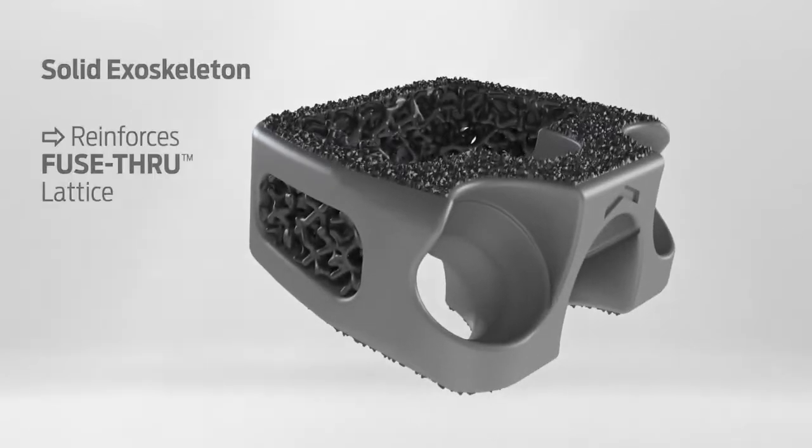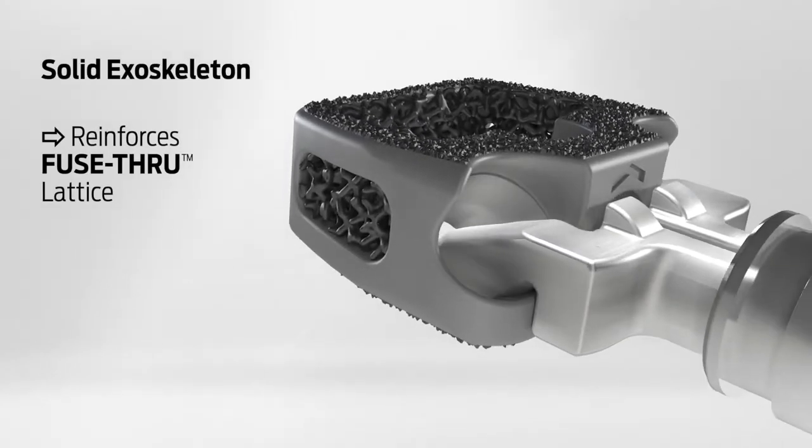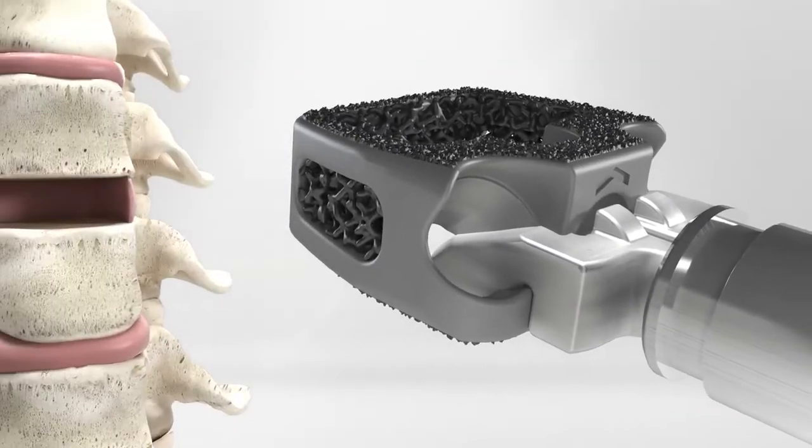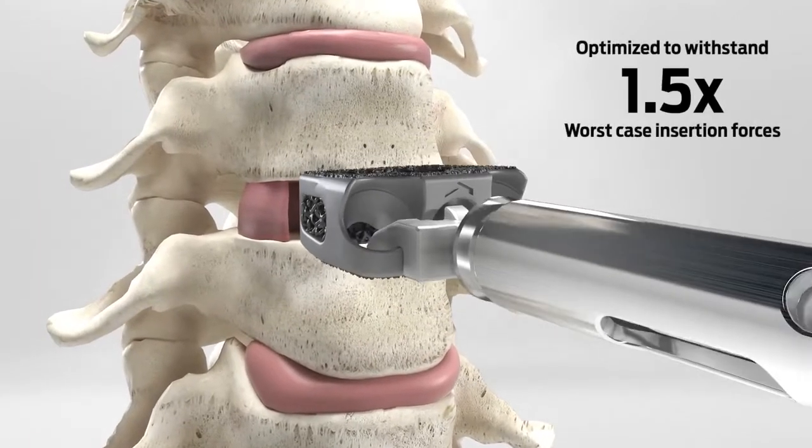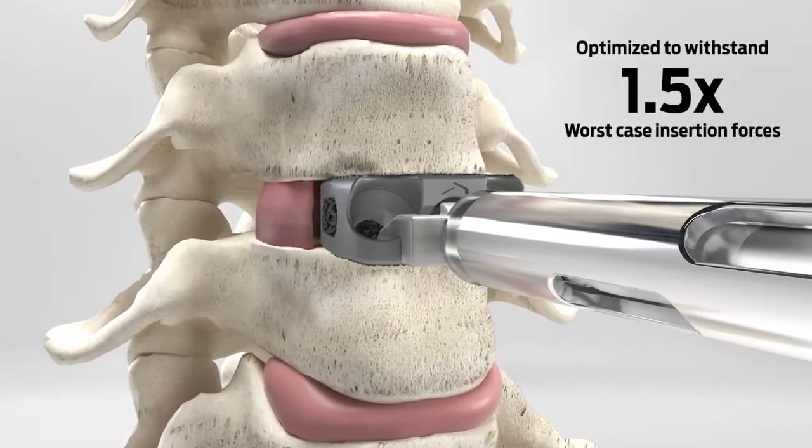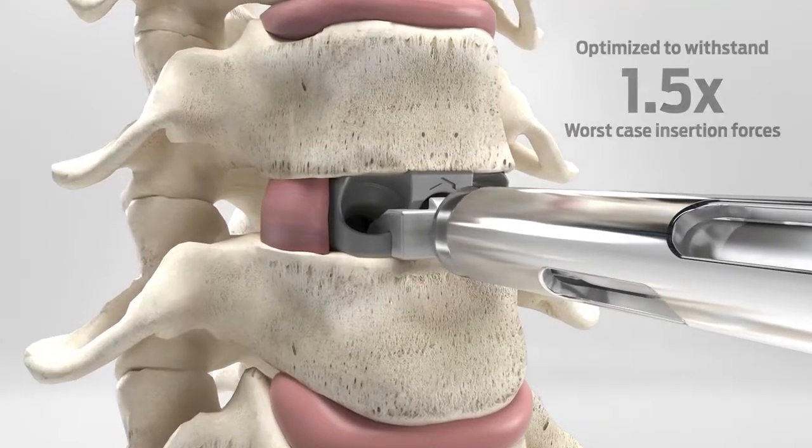A solid exoskeleton reinforces the fuse-through lattice, optimizing the strength of the device to withstand one and a half times the worst case insertion forces seen in anterior interbody fusion surgeries.